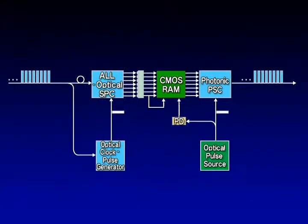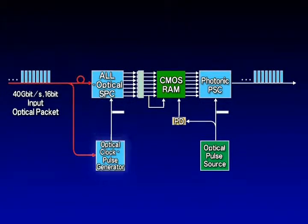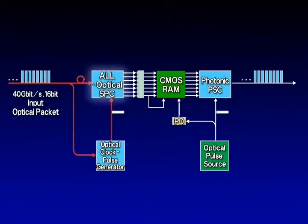When high-speed optical packets enter here, the optical clock pulse generator detects the packets and informs the optical serial-to-parallel converter of the packet's arrival.